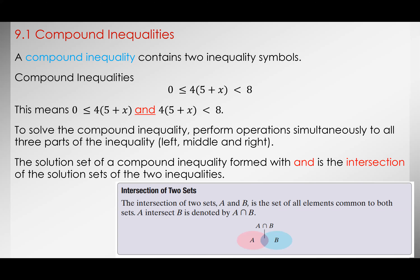Similar to 2.8 and 9.1, instead of doing one interval notation, now we have a compound inequality. The compound inequality basically tells you that instead of just doing one interval, we will do two of them. There are two types of compound inequality: we deal with the word AND and we deal with the word OR.